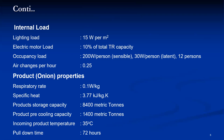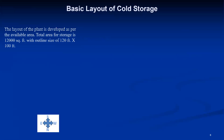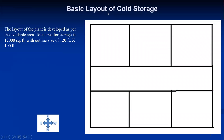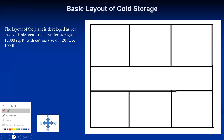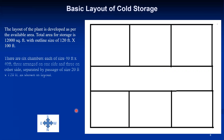Based on the design data, the layout of the cold storage can be developed. As per the available area of 12,000 square feet, a rectangle of 120 feet by 100 feet is used. This entire area is divided into 6 chambers. The 120-foot side is divided into 3 sections of 40 feet each, and the 100-foot side is divided into 40, 20, and 40 feet, with the 20-foot section serving as a passage for loading and unloading.